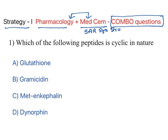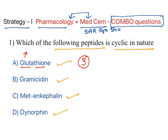Example: 'Which of the following peptides is cyclic in nature?' Options: glutathione, gramicidin, met-enkephalin, dynorphin. Glutathione is a tripeptide — the name indicates glutamate, thia (cysteine, a sulfur-containing amino acid), and glycine — and it is linear in nature, so it's not the answer.